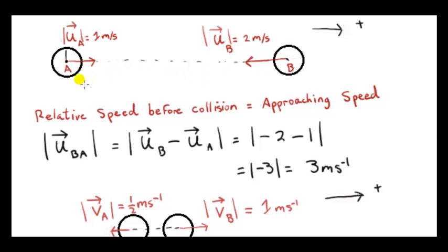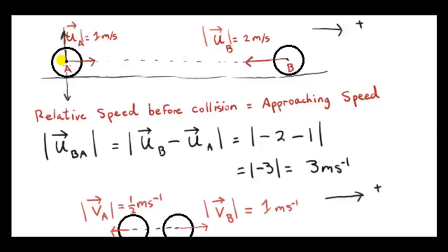It doesn't actually have to be in outer space. We could imagine these two spheres on a perfectly smooth surface near the surface of the earth. So gravity acts on the sphere — there is a force vertically downward — but that's counterbalanced by an equal but opposite contact force from the table. So these two forces sum to zero, meaning there's no resultant force on the sphere, because we're assuming no friction. There's nothing pushing back on the sphere; the sphere doesn't even roll. It literally slips along the table and continues with the same speed forever until it collides with some barrier or the second sphere.